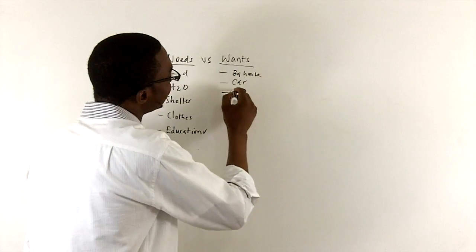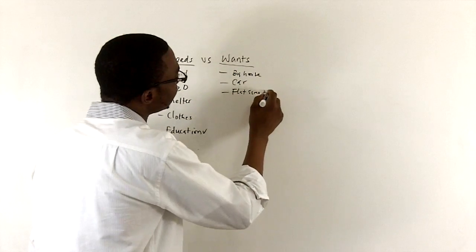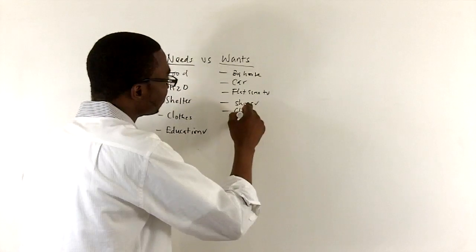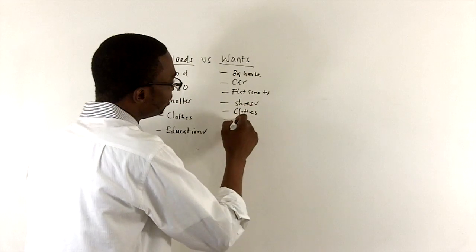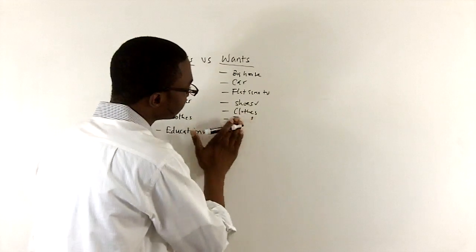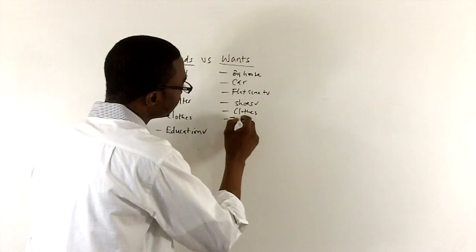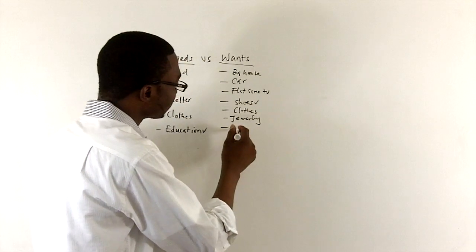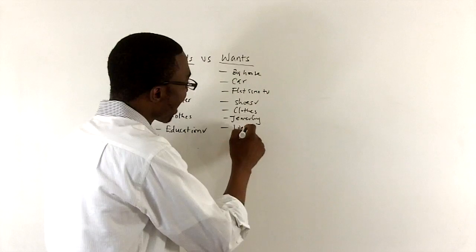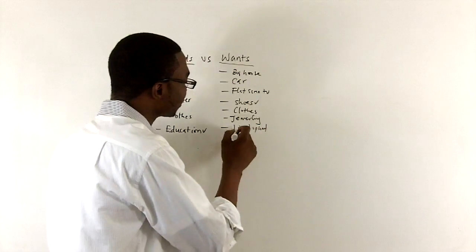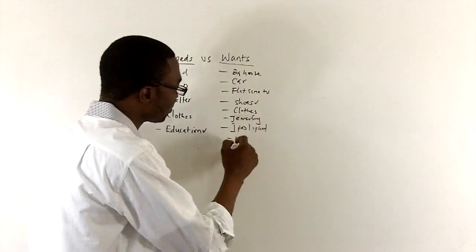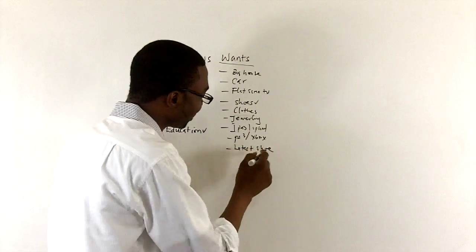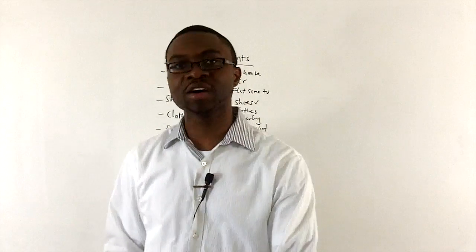People want big house. They want a car. They want a flat screen TV. They want a lot of shoes. They want so many clothes, more than they ever need. They want jewelry. We can keep going on and on. They want an iPad, an iPhone, and a Samsung. Name it every single gadget. A PS3, Xbox, the latest shoe, designer shirt. We can go on and on about things people want.